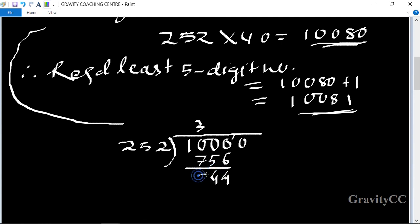And when we subtract this, we get 244. Then we bring down the zero and use the table of 9 to get 2268.